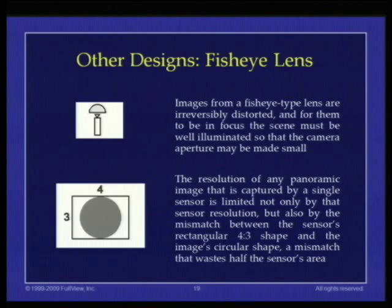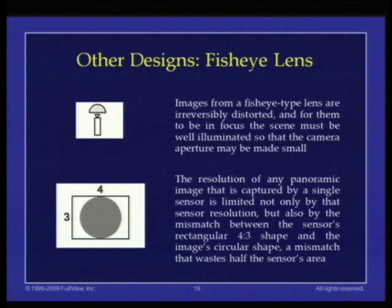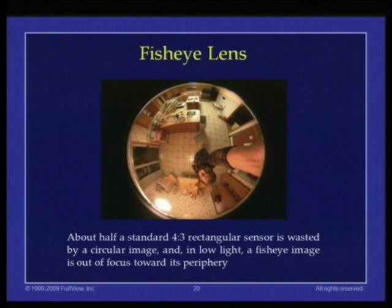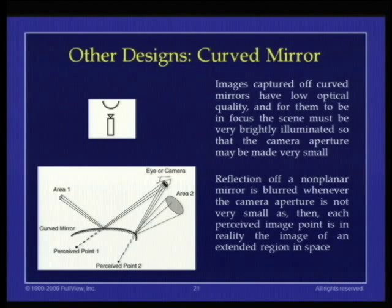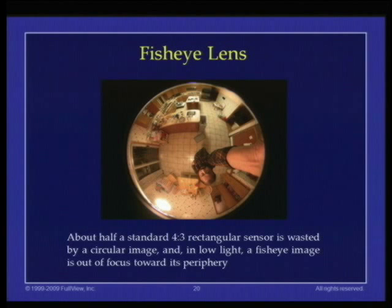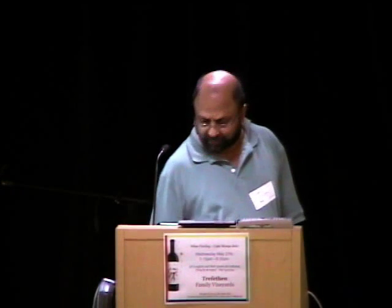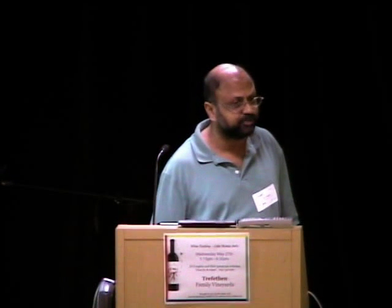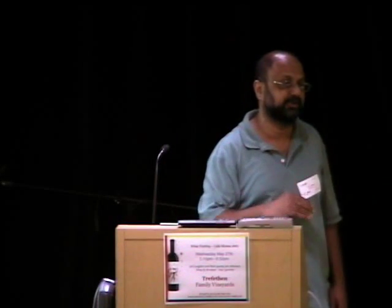The next design, which has probably been around the longest — about a hundred years or more — is a fisheye lens. The problem with the fisheye lens is that you need a really small aperture and so really long exposure times or very bright light to capture images that are in focus. It's also limited to one sensor, and about half that sensor is wasted if it's a 4x3 sensor. There was a company doing fairly well based on this technology called iPix, but they were trying to get into the video space and went bankrupt a couple of years ago. If the aperture is small enough, the fisheye isn't necessarily out of focus at the periphery — it's just that everything is compressed more, so things are at a lower resolution.